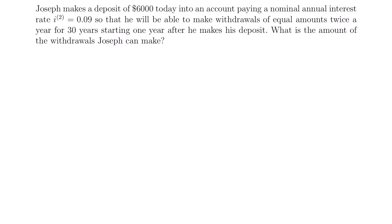Let's look at another example. Joseph makes a deposit of $6,000 today into an account paying a nominal annual interest rate of 0.09 convertible semi-annually, so that he can make withdrawals of equal amounts twice a year for 30 years starting one year after his deposit. What is the amount of the withdrawals Joseph can make? Since we're told the deposit amount, the present value equals $6,000.